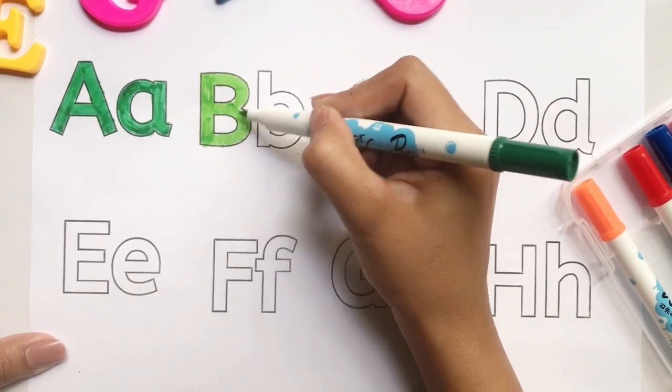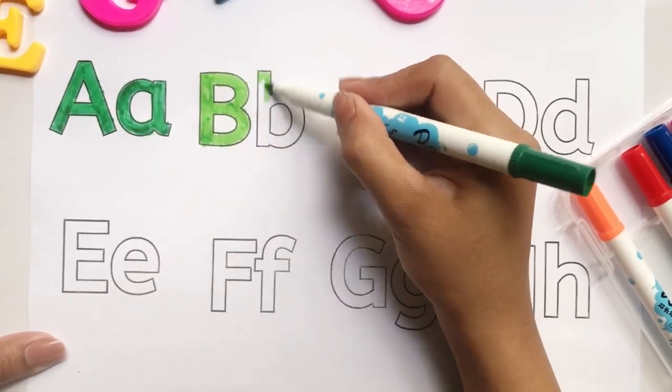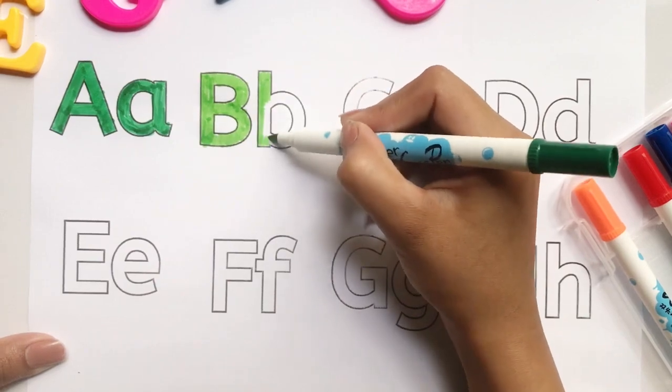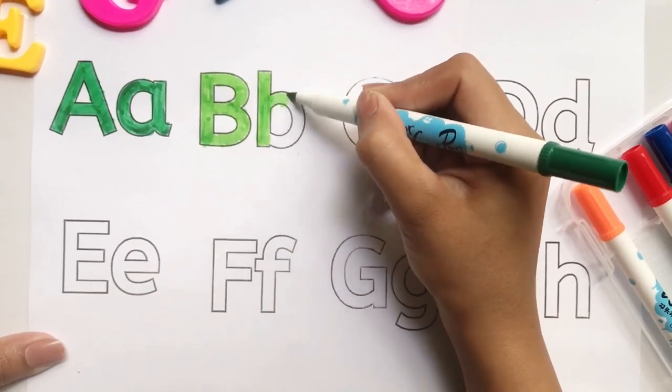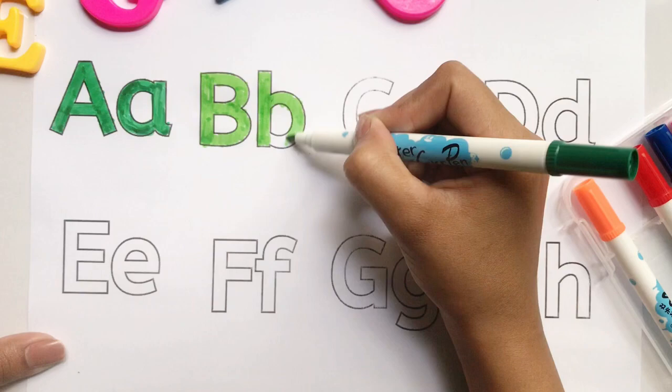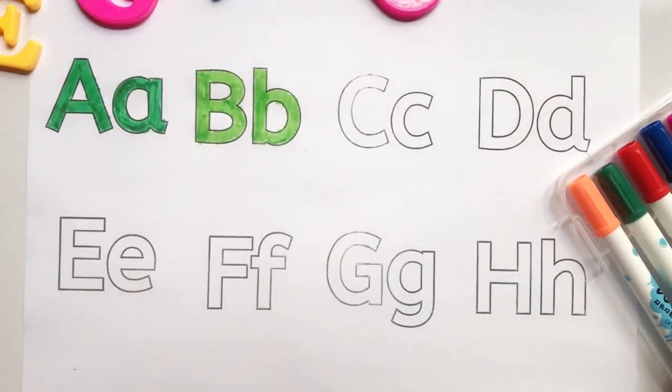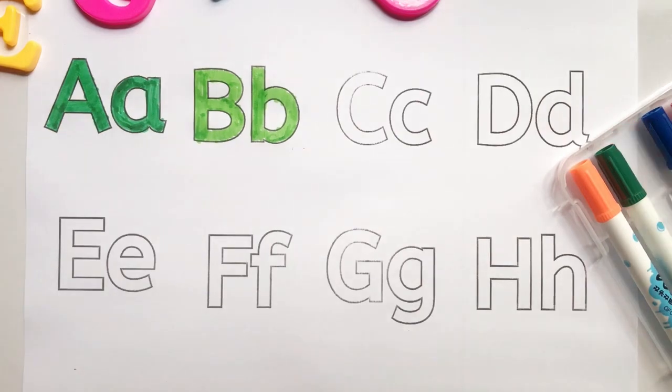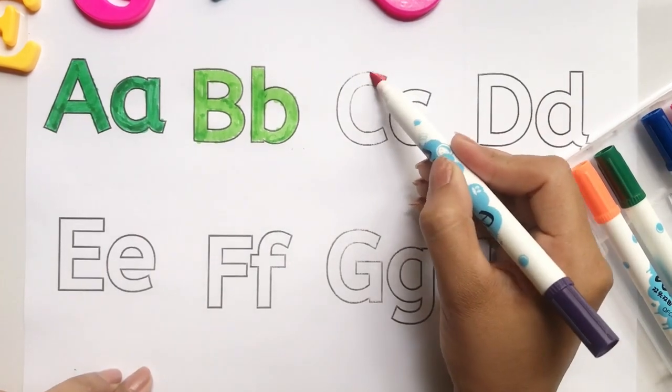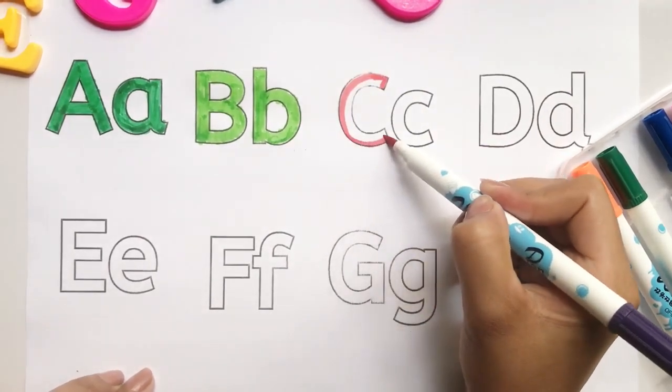B. B for balloon. A, B, C, D, E, F, G, H, I, J, K.